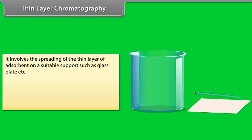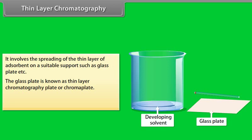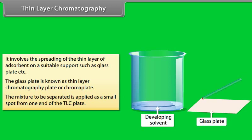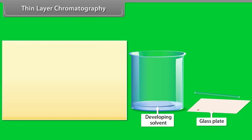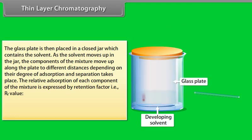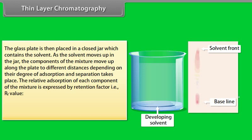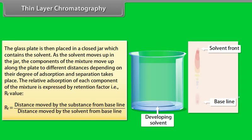Thin Layer Chromatography (TLC): It involves the spreading of a thin layer of absorbent on a suitable support such as a glass plate, known as the TLC plate or chroma plate. The mixture to be separated is applied as a small spot from one end of the TLC plate. The plate is then placed in a closed jar containing the solvent. As the solvent moves up, the components of the mixture move up along the plate to different distances depending on their degree of absorption, and separation takes place. The relative absorption of each component is expressed by the Retention Factor (Rf) = distance moved by the substance from the baseline ÷ distance moved by the solvent from the baseline.